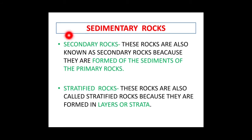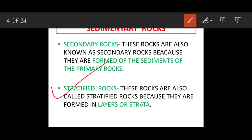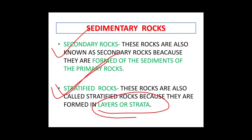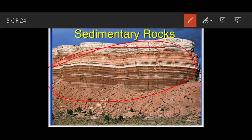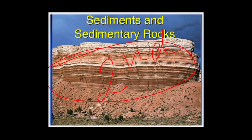Sedimentary rocks are also known as secondary rocks because they were the second rock to form on the planet. They are also known as stratified rocks because they have strata or layers. The picture clearly shows these distinct layers, which is why they are called stratified rocks.